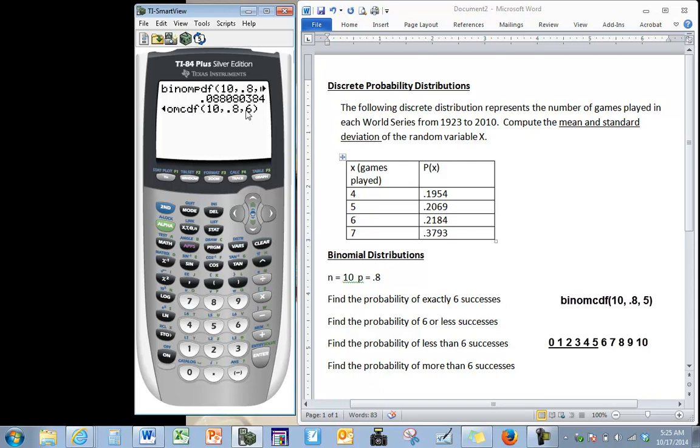So binomial cdf is finding the probability of exactly six successes, exactly five, exactly four, exactly three, exactly two, exactly one, and exactly zero, and it's adding all those probabilities together. That's what the cumulative stands for. So here we find our probability is .1209 when we round to four decimal places.